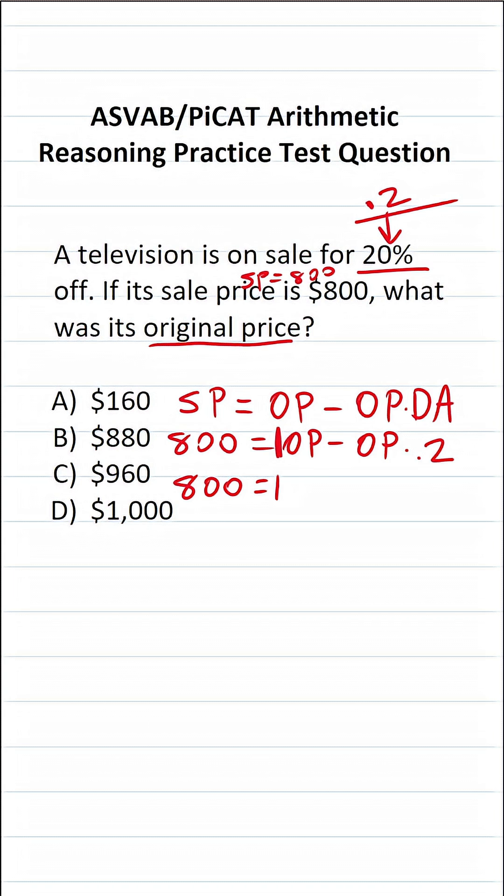So this becomes 1 original price minus, and what is original price times 0.2? It's 0.2 times the original price.